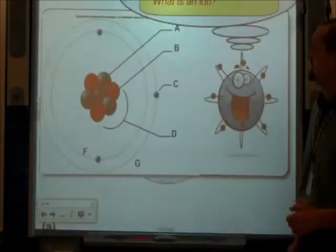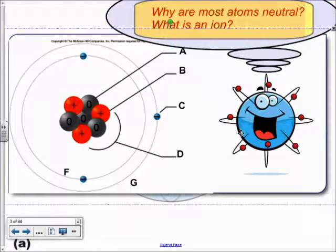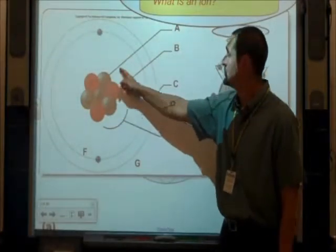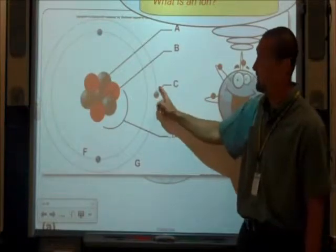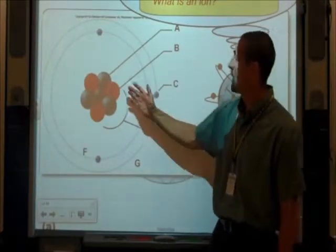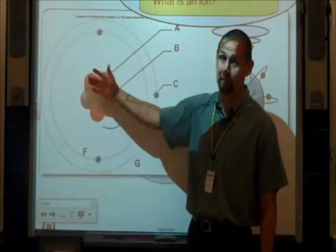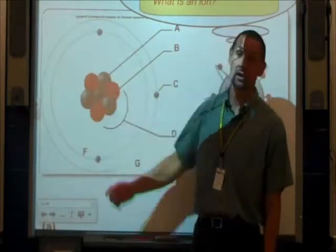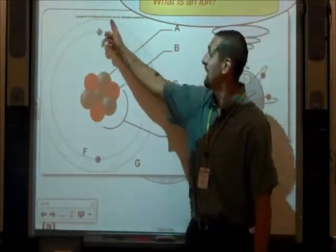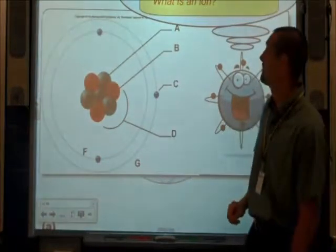So let's kind of review some of these atomic parts. Here's a part, no charge: neutron. Here's a part, positive charge: proton. Here's a part, negative charge: electron. All these protons and neutrons together make up the nucleus of the atom. This first energy level can only hold two electrons before it's full. The second energy level can hold up to eight electrons before it's full.